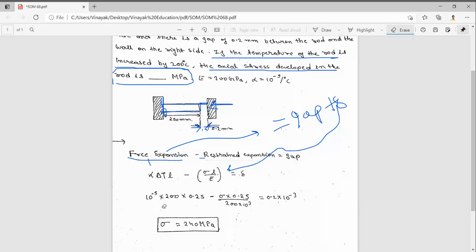Now substitute the values. Alpha is 10^-5, delta T is 200, L is 0.25. Sigma is what we want to find, L is 0.25, E is 200 times 10^3, and del equals 0.2 times 10^-3. From here we can find sigma.